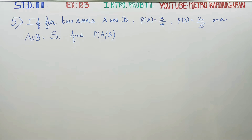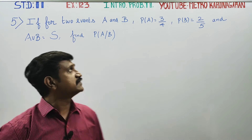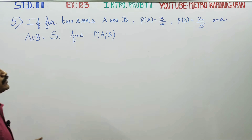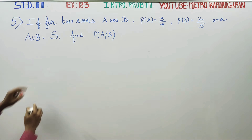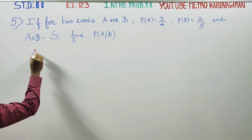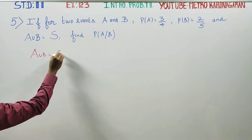Dear 11th standard students, in exercise number 12.3, introduction to probability theory, sum number 5: if for two events, probability of A is equal to 3 by 4, probability of B is equal to 2 by 5, and it is given that A union B is equal to the sample space.